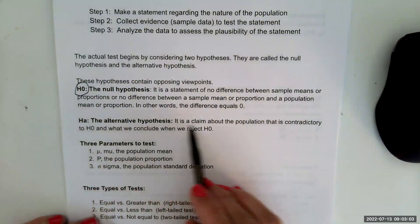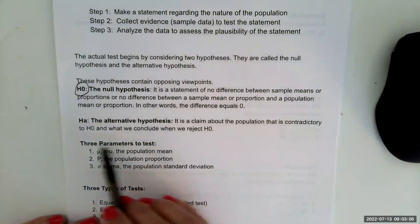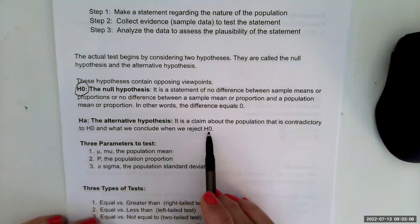HA, the alternative hypothesis. It is a claim about the population and it's contradictory to H0 and what we conclude when we reject H0.